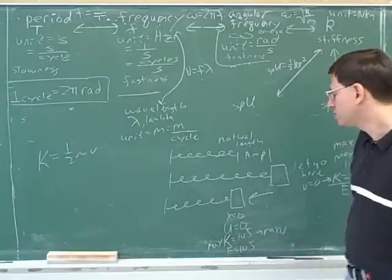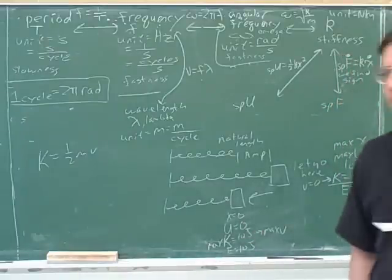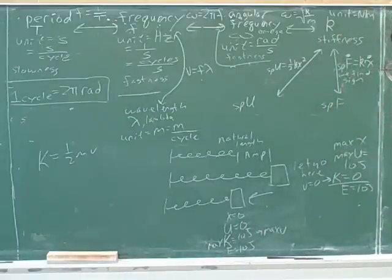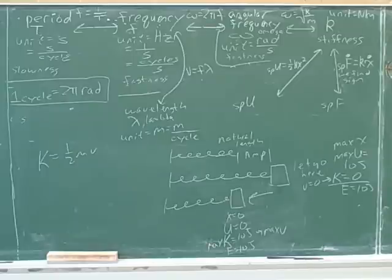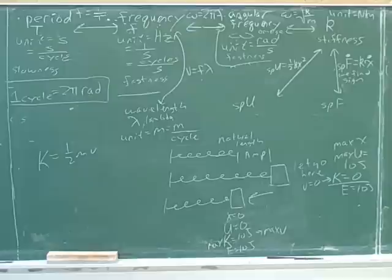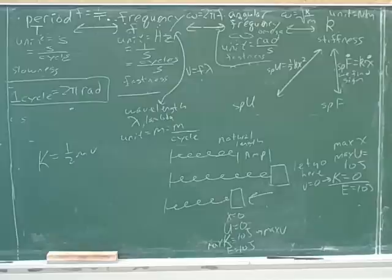And there's no potential energy over here. So when does the maximum kinetic energy happen? The maximum kinetic energy happens when X is zero. At the natural length.